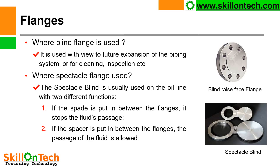Where is a spectacle flange used? You can see a picture of a spectacle blind and flange. The spectacle blind is usually used on the oil line with two different functions. If the spade is put in between the flanges, it stops the fluid passage. If the spacer is put in between the flanges, the passage of the fluid is allowed. So the direction of the spectacle blind is changed as per the requirement of the flow.